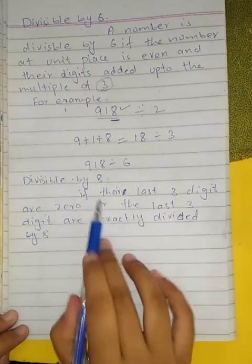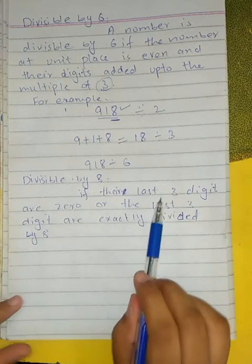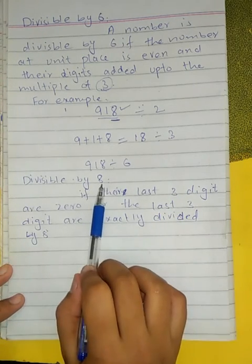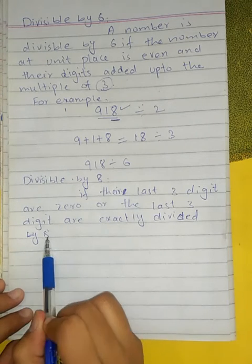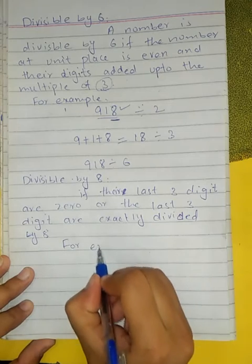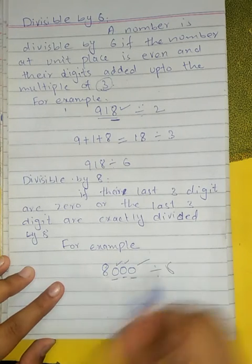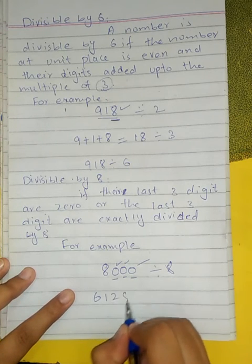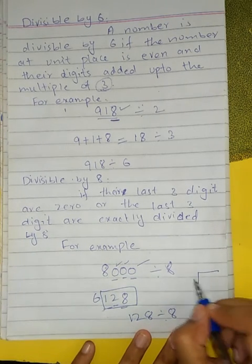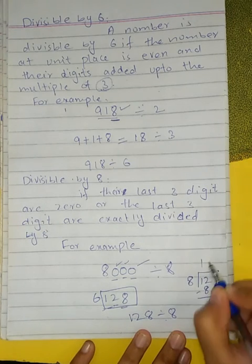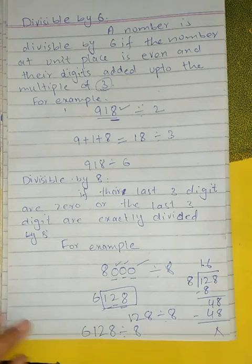Divisibility by 8: a number is divisible by 8 if its last three digits (ones, tens, and hundreds place) are either all 0, or the three-digit number formed by those digits is divisible by 8. For example, if the last three digits form a number divisible by 8 (e.g., 8×6=48), then the complete number is divisible by 8.